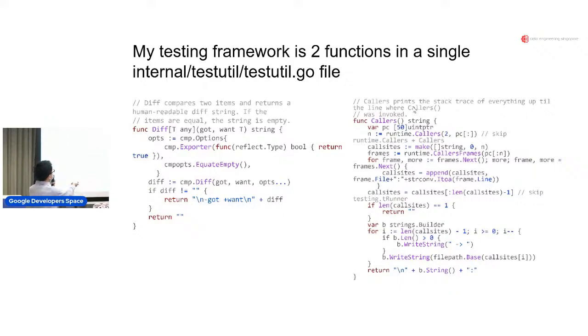If the diff is not empty, then I will annotate this got and want because I need to know that the stuff with the minus in front is what I got, and the stuff with the plus in front is what I want. And callers will just print a stack trace of wherever callers was invoked. You can put callers wherever you want and it will show you exactly how we got to the callers call from the top level testing function.